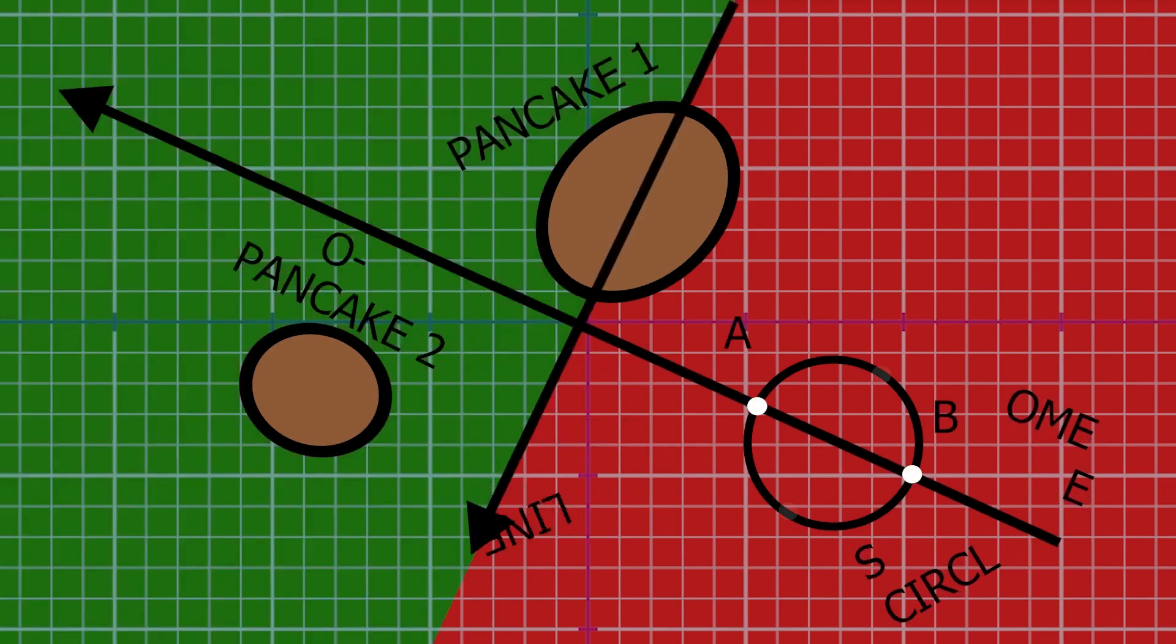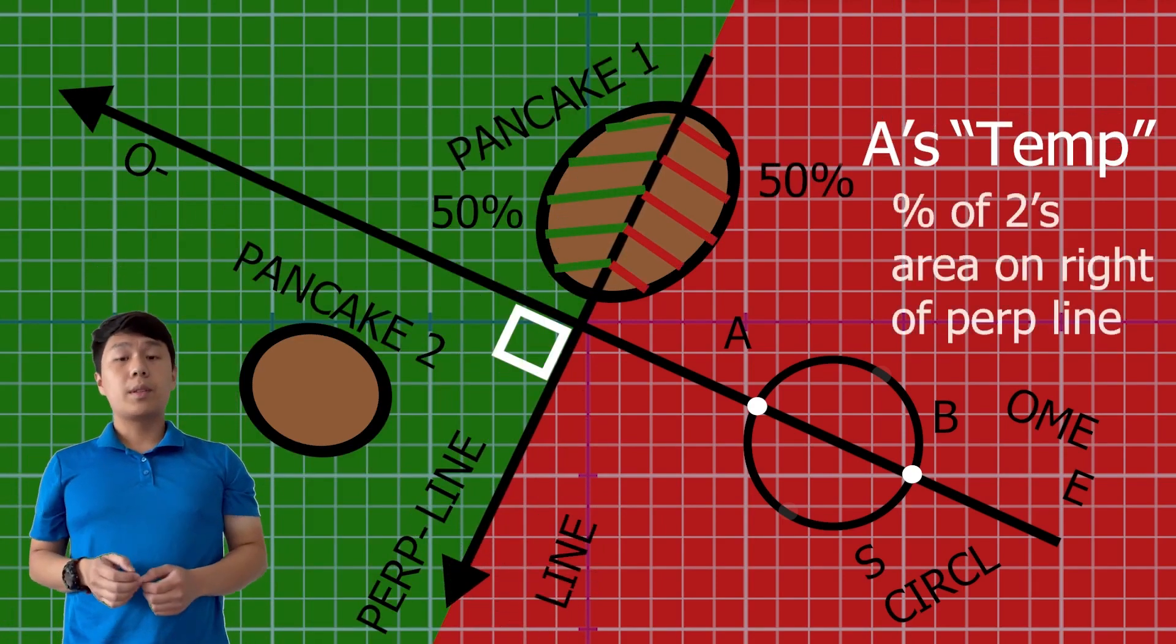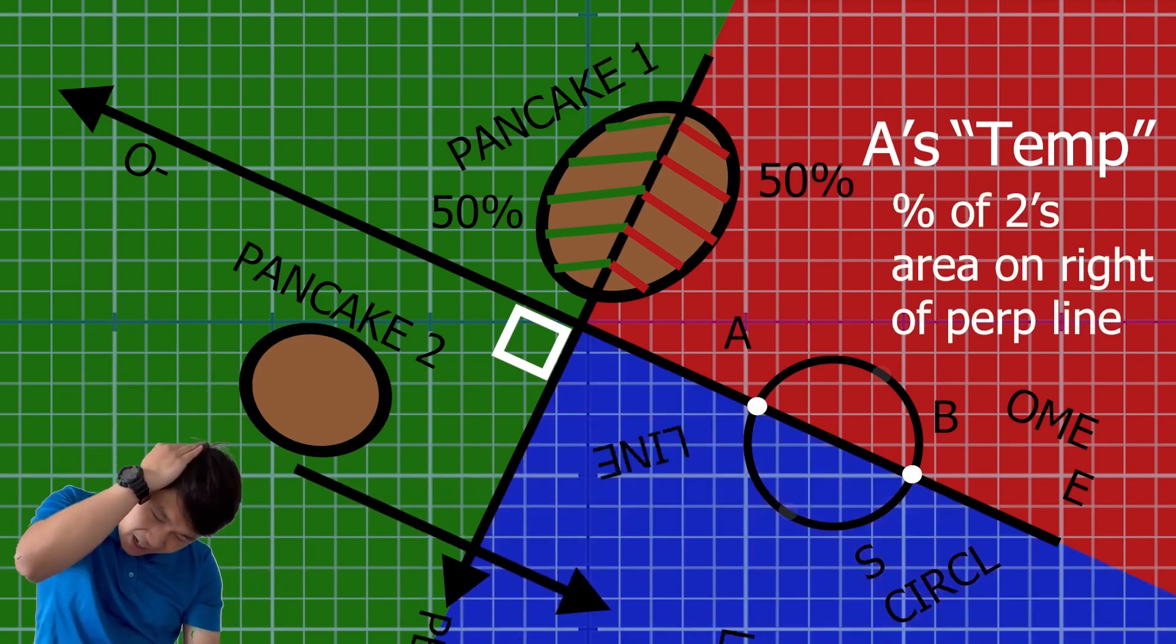From here, imagine a line perpendicular to the O-line that cuts Pancake 1 in half. Our temperature at A will be the percentage of Pancake 2's area on the right half of this perpendicular line.